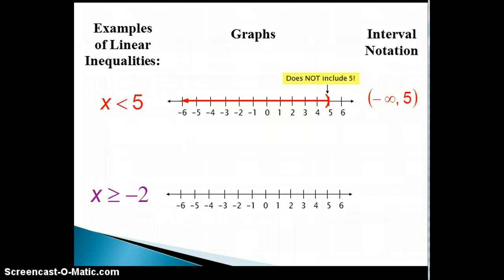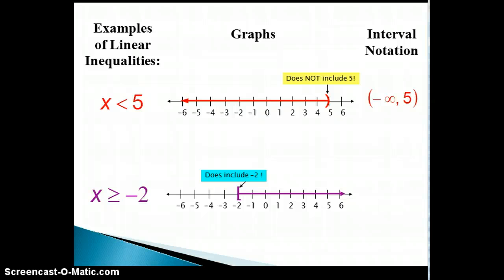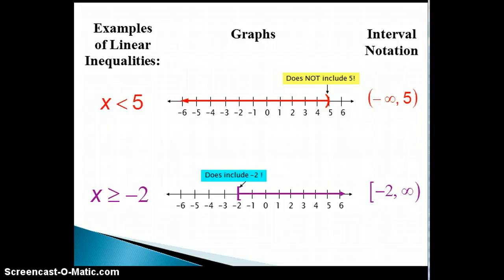Recall that the next inequality is the set of all real numbers greater than or equal to negative 2. Thus, the graph will have an arrow that indicates just that. Notice that the arrow starts at negative 2 and then points to all numbers greater than negative 2. A square bracket is placed at negative 2 to indicate that this number is included in the set. This is the same symbol we will use in the interval notation. Note that this notation says that negative 2 is the left end point and is included in the set, and the right end point is infinity — we always use a parenthesis next to infinity.